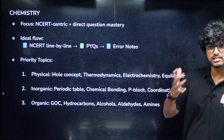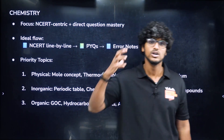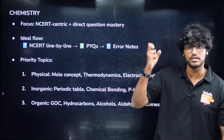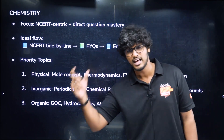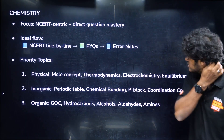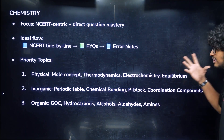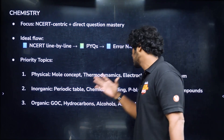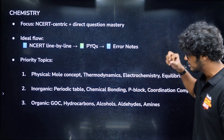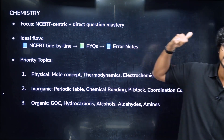Chemistry is first NCRT-centric with direct questions. You can master the ideal flow — complete it line by line. Then solve the PYQs. The topics of physical chemistry are: Mole Concept, Thermodynamics, Electrochemistry, and Equilibrium. Inorganic chemistry: Periodic Table, Chemical Bonding, P-block Elements, Coordination Compounds. Organic chemistry: Hydrocarbons, Alcohols, Aldehydes, and Amines. You can complete it.